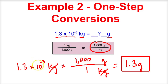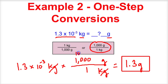So 1.3 times 10 to the negative third kilograms is equal to 1.3 grams. And if you wanted to, you can actually do this problem in your head: 1,000 is 10 to the third, and 10 to the third times 10 to the negative third is 10 to the zero, or 1, and 1 times 1.3 is 1.3.